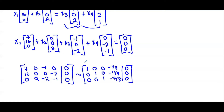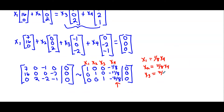The variables here are the coefficients of the molecules — how many of each molecule we need. We have a free variable in x4, meaning we can plug in anything for x4 and that determines the rest of the system. So x1 = (1/8)x4, x2 = (11/8)x4, x3 = (7/8)x4, and x4 is free. To get rid of fractions, let x4 = 8, making the others 1, 11, 7, and 8.